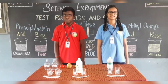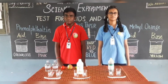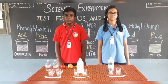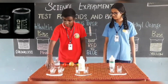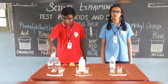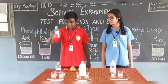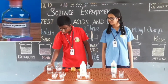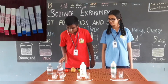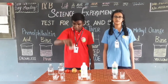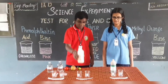How to identify acids and bases? We are going to show you this by doing a simple experiment. Materials required: beaker, hydrochloric acid, sodium hydroxide, litmus paper, methyl orange, and phenolphthalein.